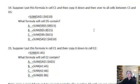Now suppose I put this formula in cell C1 and then copy it down and then over to all the cells between C1 and D5. Here's my formula. What formula will cell D5 contain? Alright, this one's getting at relative versus absolute. Notice we have absolute rows and absolute columns in this question. So the formula won't change even if you copy it to another cell. And therefore the answer is D.